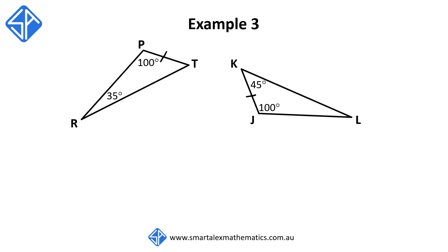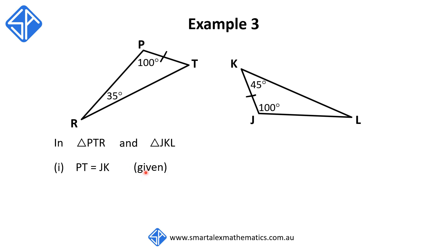Moving on to our third example, we've got triangle PTR and triangle JKL. Starting with the introduction: in triangle PTR and triangle JKL. The first reason: side PT is equal to side JK — given, as it's marked in the diagram. The second reason: angle TPR is equal to angle KJL, both equal to 100 degrees — given, as it's marked in the diagram.